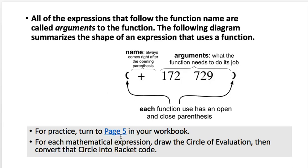So, for practice, turn to page five in your workbook. So, go ahead and open page five. And then on that page, for each of the expressions there, draw the circle of evaluation. And then write the racket code. So, the paren version of that. So, that's on page five in your notebook. There are four examples there to do the circle of evaluation and the racket code. So, go ahead and pause and do that now.